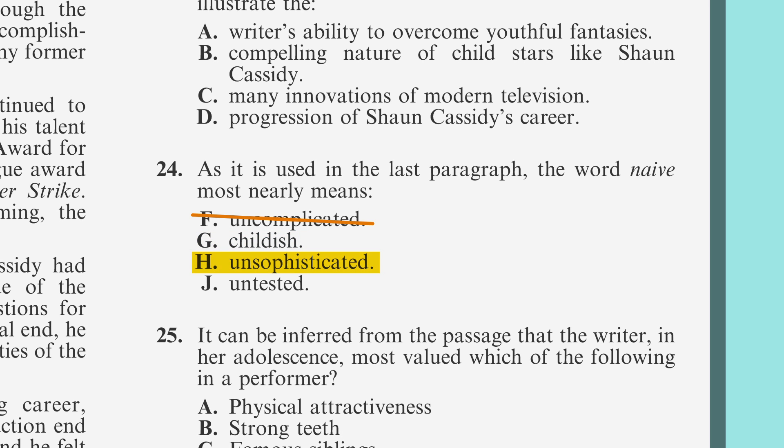Choice H is unsophisticated, which is the primary definition of the word naive, but doesn't fit in the context of this paragraph, which focuses on the writer's age, so let's cross it out. Choice J is untested, which isn't relevant in the context of this paragraph. Yep, choice G is the best synonym for naive in the given sentence, so that's our answer.